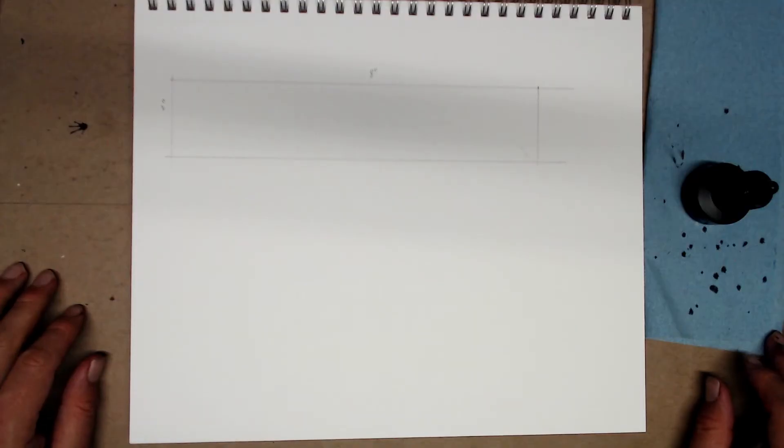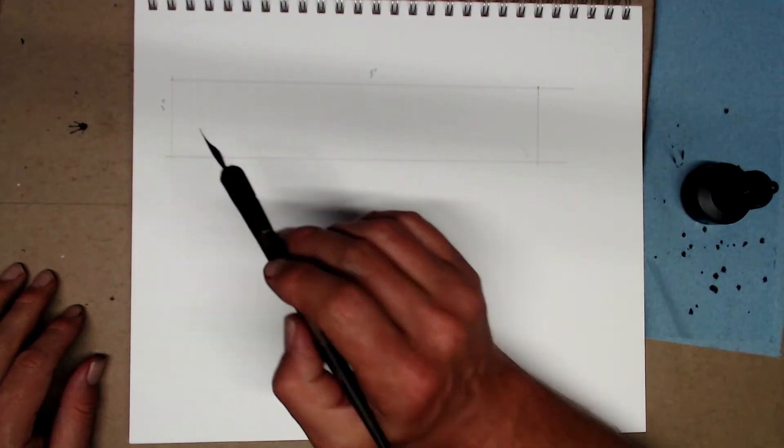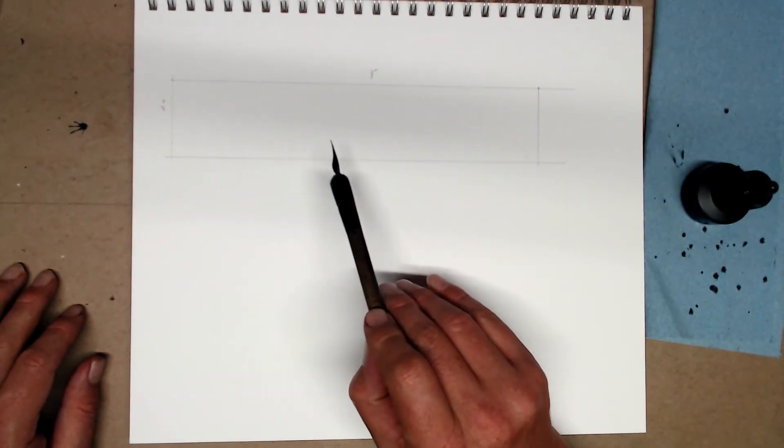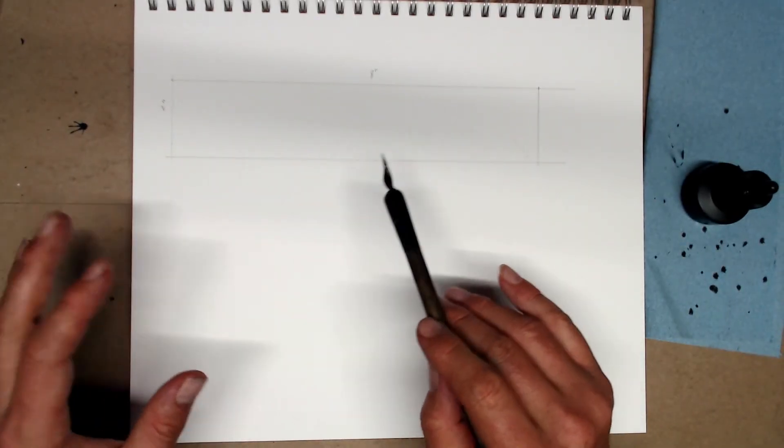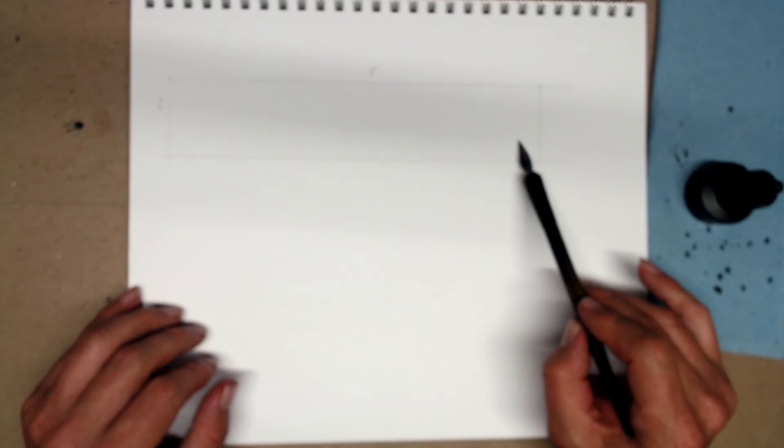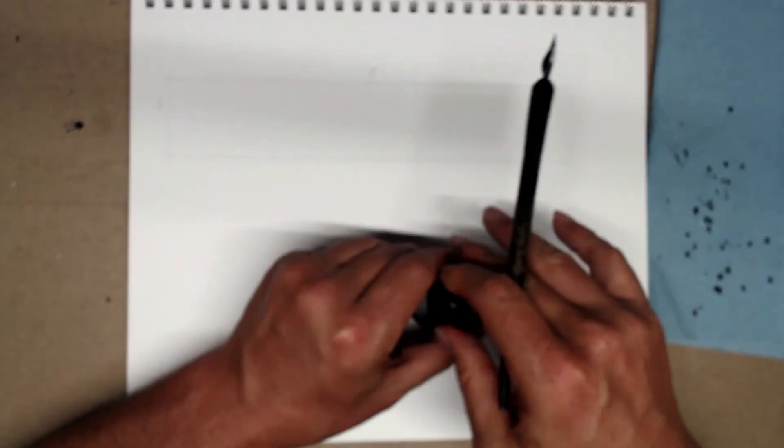In this next exercise, I'm going to do a value scale. This part is going to be white. And over here, I'm going to gradually go darker and darker and darker with a series of multidirectional hatching until we get pretty dark, perhaps almost black. Let's give this a shot.